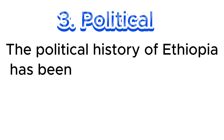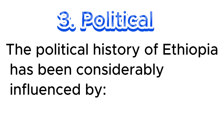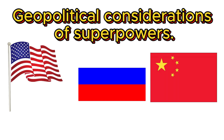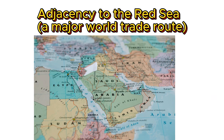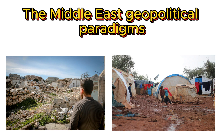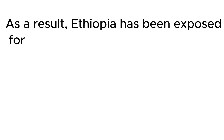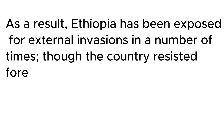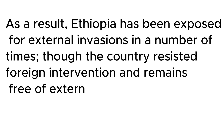Third, the political implication. The political history of Ethiopia has been considerably influenced by the geopolitical considerations of superpowers, its adjacency to the Red Sea and major world trade routes, and Middle East geopolitical dynamics. As a result, Ethiopia has been exposed to external invasions a number of times, though the country resisted foreign invasion and remains free of external domination.